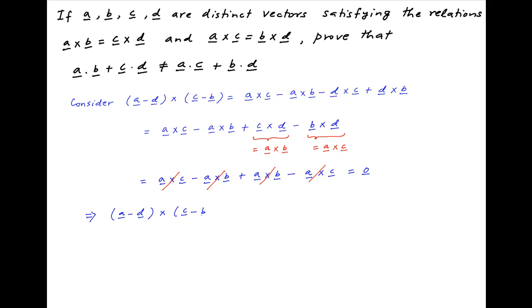Therefore, a minus d cross c minus b is equal to the null vector, which means that vector a minus d is parallel to vector c minus b.